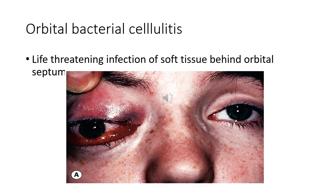Orbital cellulitis is a life-threatening infection of the soft tissue behind the orbital septum. It may occur at any age but is more common in children. The most common causative organisms are Streptococcus pneumoniae, Staphylococcus aureus, Streptococcus pyogenes, and Haemophilus influenzae.